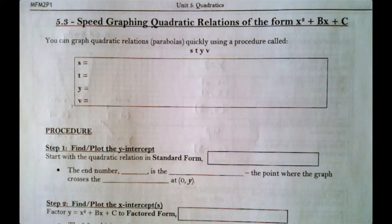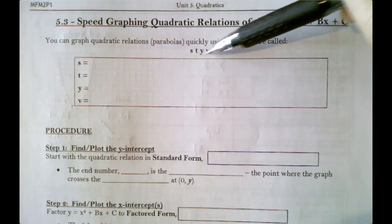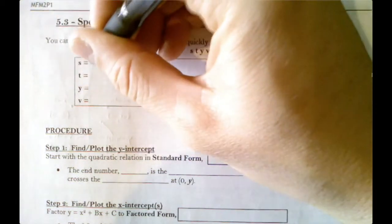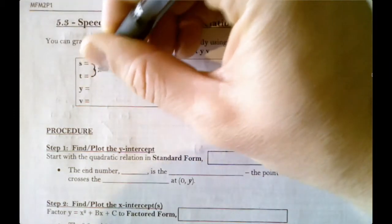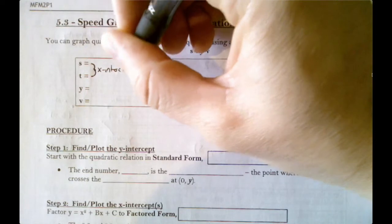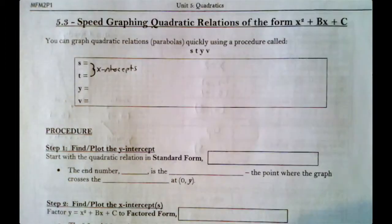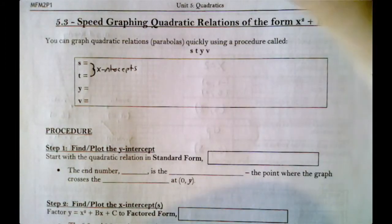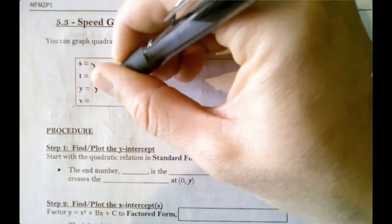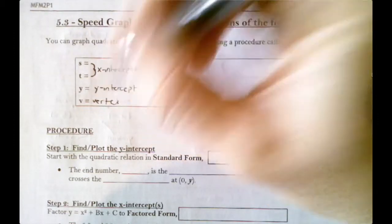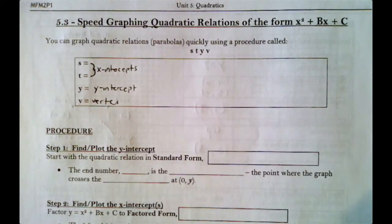Speed graphing is called the STYV method. These letters represent the things we need to find in order to graph. S and T stand for the x-intercepts — we factor to find them. Y stands for the y-intercept. And V stands for vertex. If we can find these four things, we can graph a parabola.